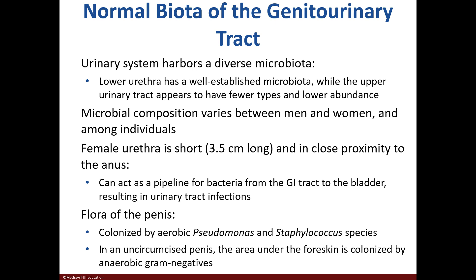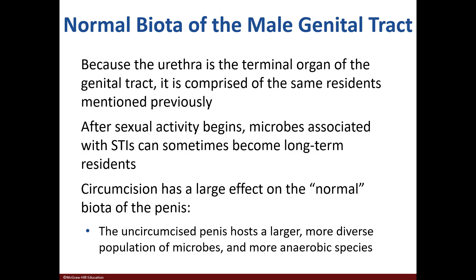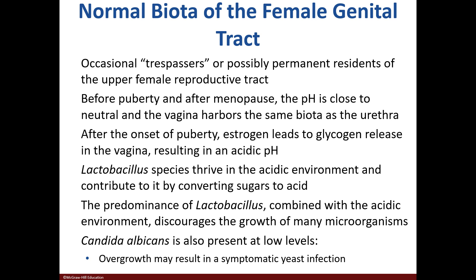The penis contains pseudomonas and staphylococcus, but this differs in uncircumcised individuals. The urethra contains pseudomonas and staphylococcus as well. Pathogens that cause STIs may become long-term residents. Circumcision has an effect on the normal flora. Sometimes microbes take up residence in the upper female reproductive tract. After puberty, the environment becomes acidic and Lactobacillus predominates, keeping other microbes at bay. Candida albicans is also present.